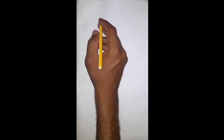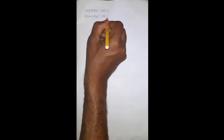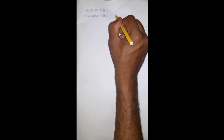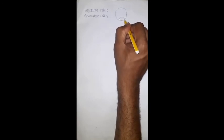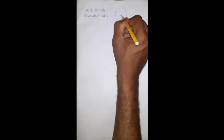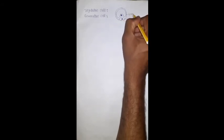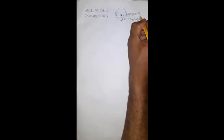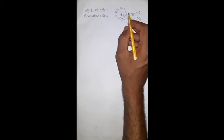Whenever the pollen grain is released from the anther, it is in the two-celled condition — consisting of one small cell called the generative cell, and one big cell with a very big vacuole, that is the vegetative cell. After it is released from the anther, it undergoes some significant changes.